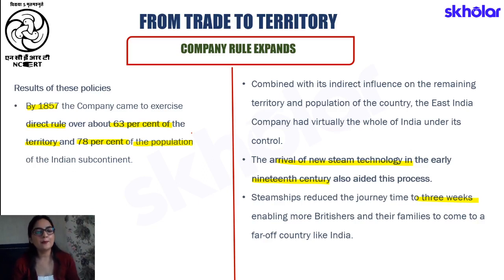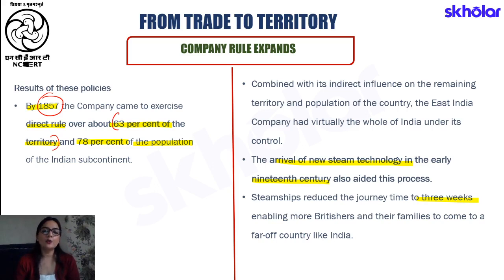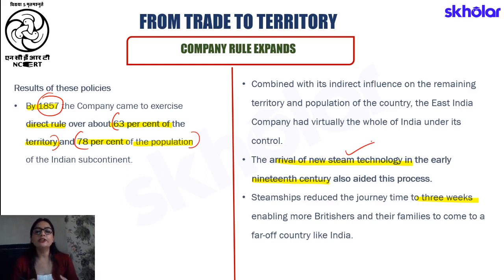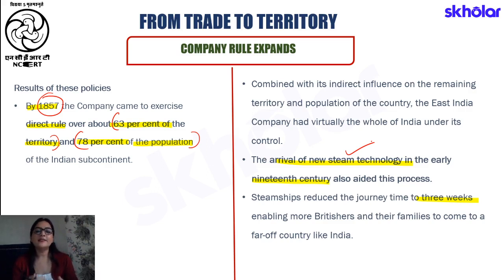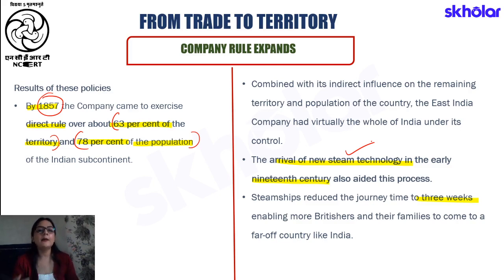An important result of these instruments of accession was that by 1857, 63% of India's territory was under the East India Company's direct rule, and around 78% of the population was under their direct supervision. In the early 19th century, the arrival of steam technology was very helpful for the East India Company's expansion. Britishers who previously took months to reach India could now arrive in three weeks by steamship, increasing the British presence in India.